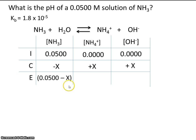So at equilibrium, we have what we started with, minus how much it changed by. And of course we have x and x.